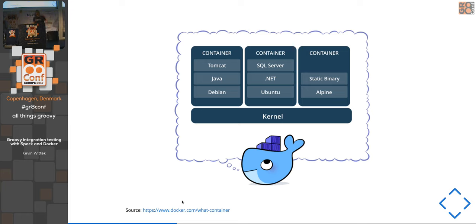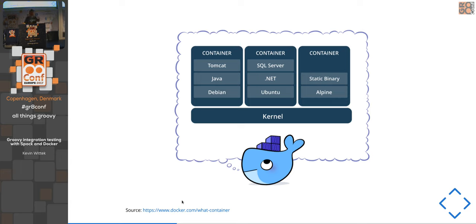Basically, you have the kernel of the operating system and Docker is a container technology. A container is a set of application binaries which run on top of your kernel. For example, a container could consist of a Java installation in a Debian environment running a Tomcat stack, or a Microsoft stack with .NET Core and SQL Server on Linux, or even just a static binary in an Alpine container where you don't need any dependencies. Containers built from scratch containing only a static binary are common in the Go and Rust world.